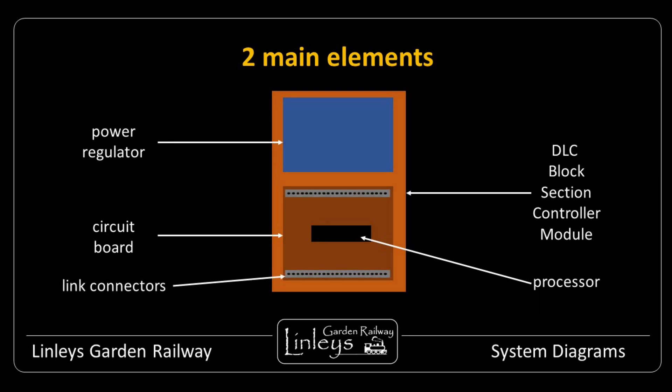Along the top and bottom edges of the main circuit board are rows of terminal connectors which enable links to be made to all the inputs and outputs.